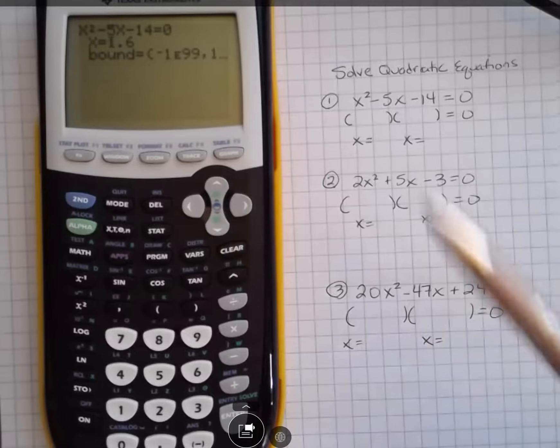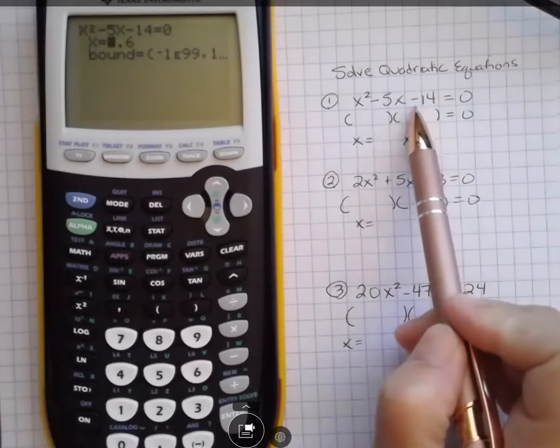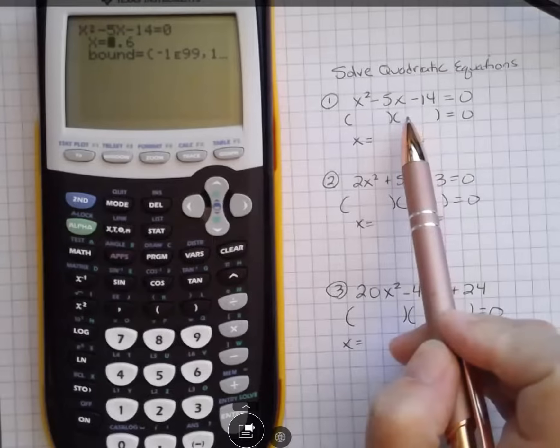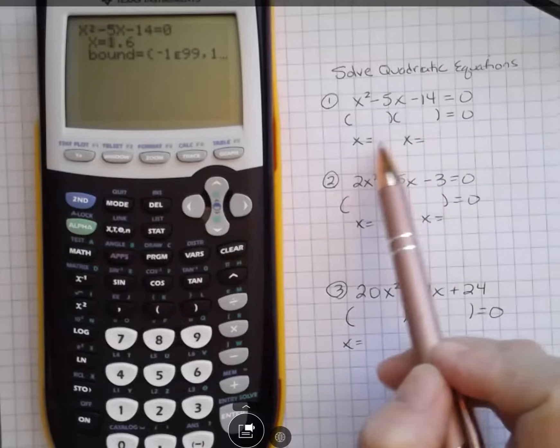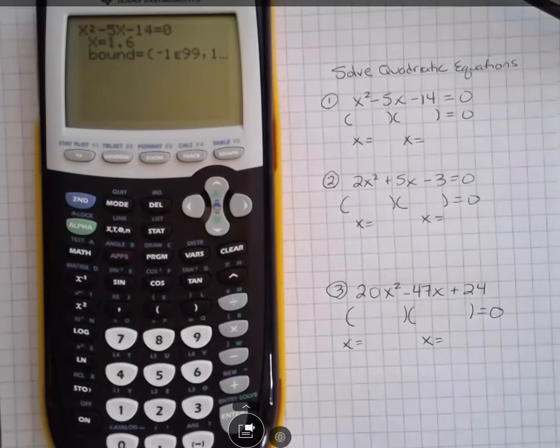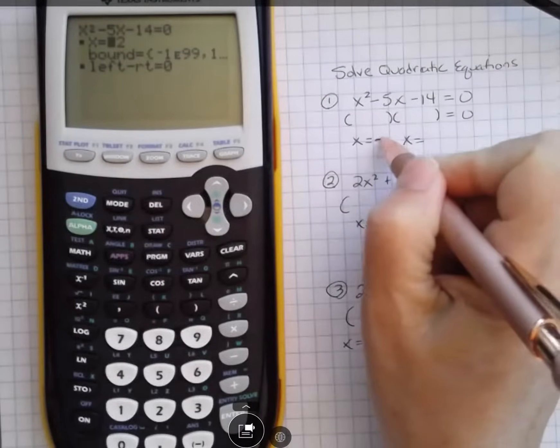So I know that when I factor something that has a minus at the end, I get one plus and one minus. That's what I know about factoring. So I know one of these answers is going to be positive and one's going to be negative. I'm going to start off with a negative guess of, let's say, negative 3, and I'm going to hit Alpha Solve, and that gives me the answer of negative 2.